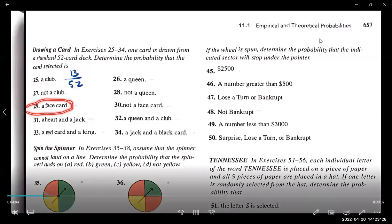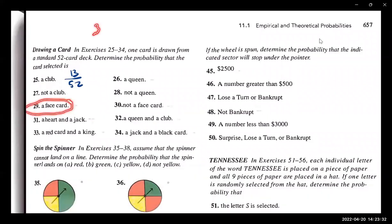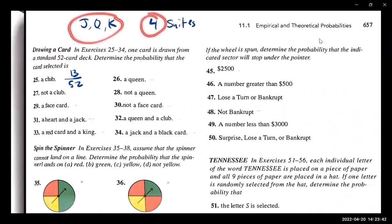There are three face cards per suit — jack, queen, king — and there are four suits. So that's four times three, which is 12 out of 52.